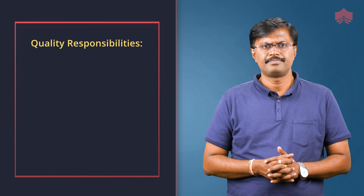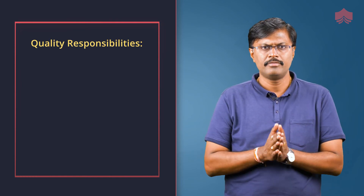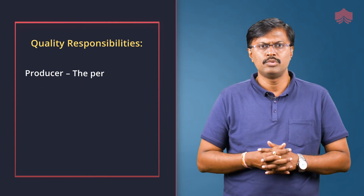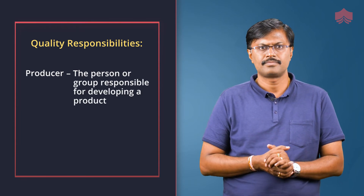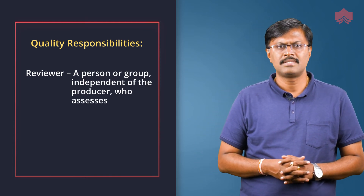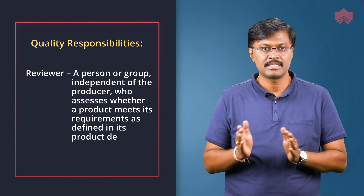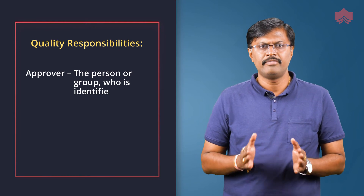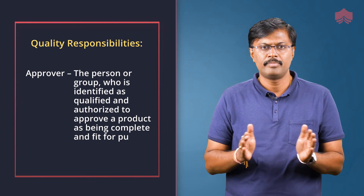Quality responsibilities are often described in terms of producer, reviewer, and approver. Producer is an individual or group responsible for developing a product. Reviewer is an individual or group independent of the producer who assesses whether the product meets its requirements as defined in its product description. Approver is an individual or group who is identified as qualified and authorized to approve the product as being complete and fit for purpose.